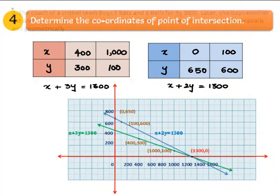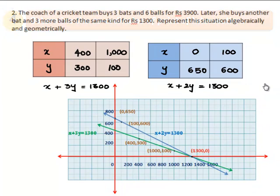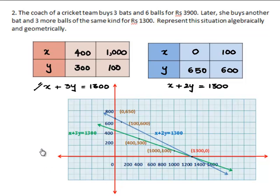After joining the points, we get the straight lines X + 2Y = 1300 and X + 3Y = 1300. This is the graphical representation of the two equations representing the given situation.